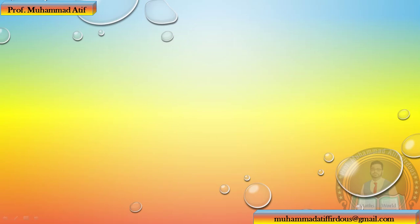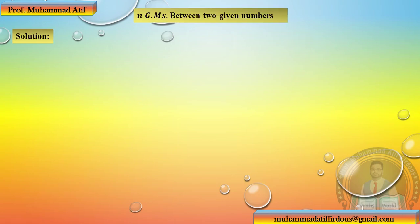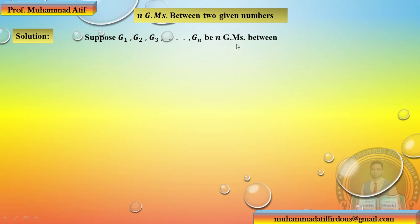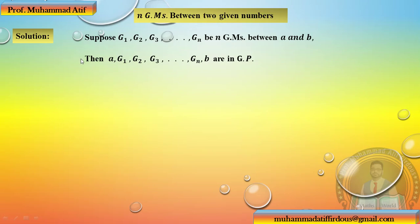Next، ایک proof ہم نے 6.3 میں کیا تھا۔ وہاں n arithmetic means between two numbers تھا، اب یہ ہے n geometric means between two given numbers۔ Suppose g₁, g₂, ..., gₙ are the n geometric means between A and B، تو ہم لکھ سکتے ہیں: A, g₁, g₂, ..., gₙ, B — یہ پوری sequence geometric progression کہلائے گی۔